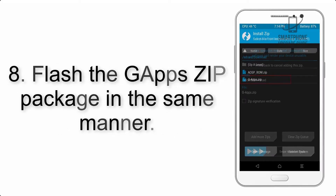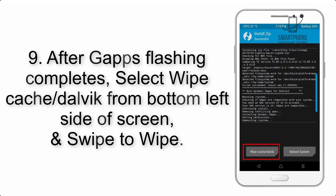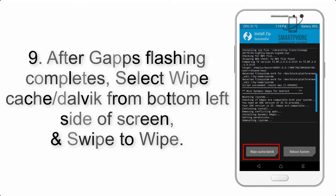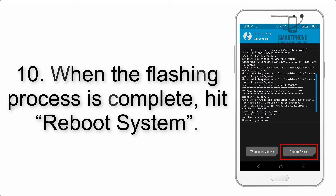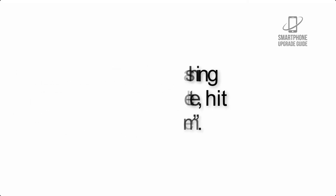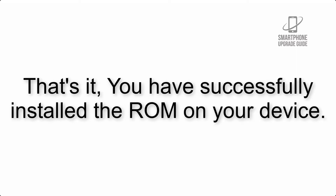Step 8: Flash the GApps zip package in the same manner. Step 9: After GApps flashing completes, select Wipe Cache and Dalvik from the bottom left side of the screen and swipe to wipe. Step 10: When the flashing process is complete, hit Reboot System. That's it — you have successfully installed the ROM on your device.